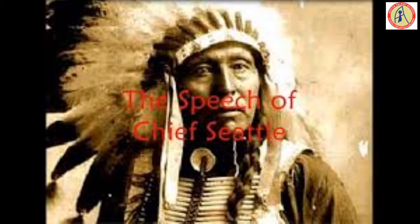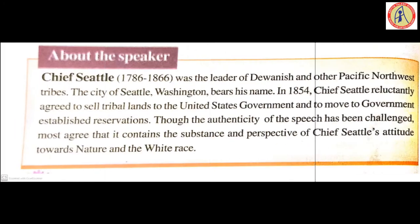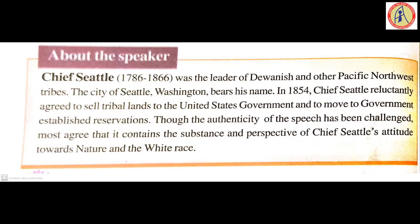Chief CRO, born 1786, passed away 1866. He was the leader of the Duwamish and other Pacific Northwest tribes. The city of Seattle, Washington, bears his name. In 1854, Chief CRO reluctantly agreed to sell tribal lands to the United States government and to move to government-established reservations.